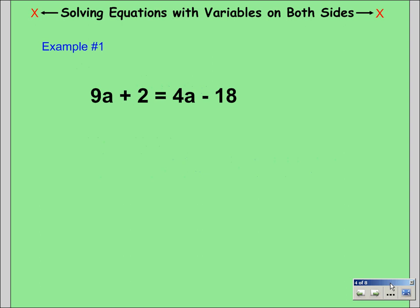In our first example we have 9a plus 2 equals 4a minus 18. Because we have 9a on the left side, we're going to move our 4a over onto the left side because 9 is greater than the 4 on the right side of the equation.